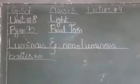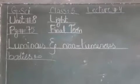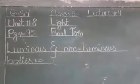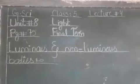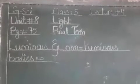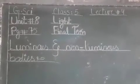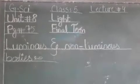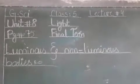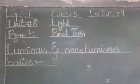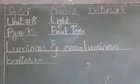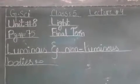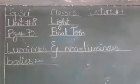What is luminous and what is non-luminous? Luminous کا اصل مطلب ہے چمکدار — meaning shining or bright.